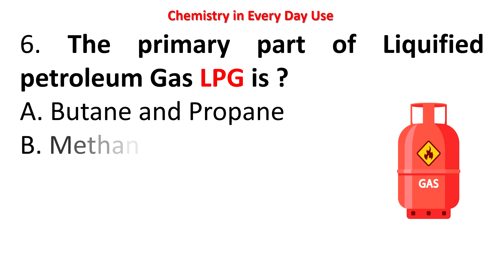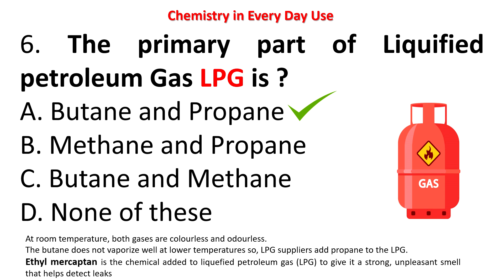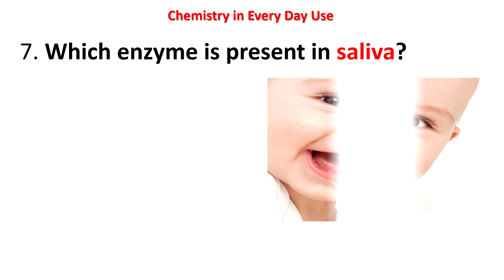Next question: the primary components of liquefied petroleum gas (LPG) are — butane and propane, methane and propane, butane and methane, or none of these? The answer is butane and propane. At room temperature both gases are colorless and odorless. Butane does not vaporize well at lower temperatures, so LPG suppliers add propane to it. Importantly, ethyl mercaptan is the chemical added to LPG to give it a strong, unpleasant smell to help detect leaks, since butane and propane are themselves odorless and colorless.